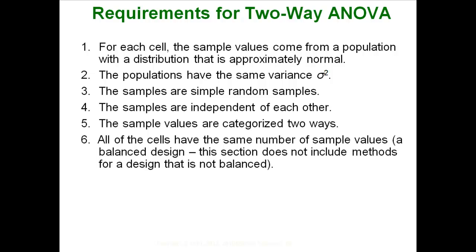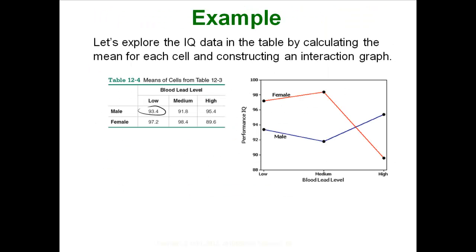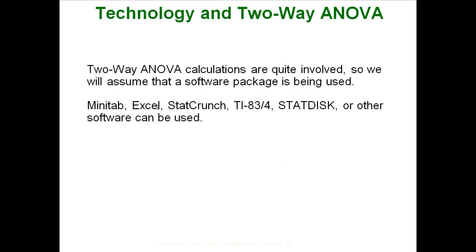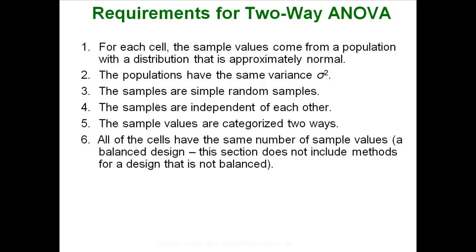Requirements for a two-way ANOVA: for each cell, the sample values must come from an approximately normally distributed population. The populations should have the same variances. The samples are supposed to be simple random samples and independent of each other. The sample values are categorized in two ways, and all cells must have the same number of sample values — a balanced design. There are other methods for unequal sample sizes, but here we only do balanced designs.